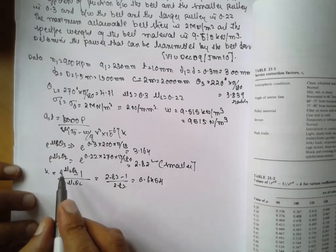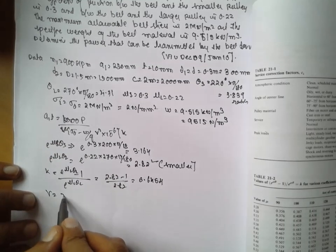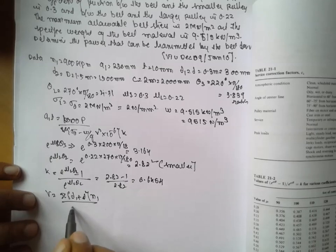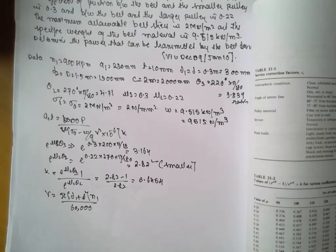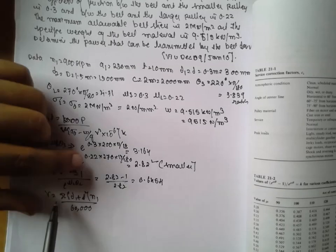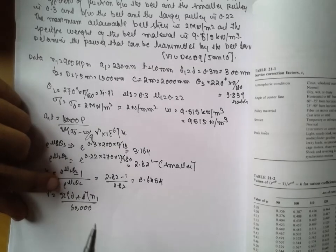Now you have to find out the velocity. Velocity is nothing but V equals pi times D1 plus t into N1 divided by 60,000. Thickness you have to consider only in the case of flat belt drives, not in the case of V belt drives. In the V belt drive we are not writing t there. You have to write directly pi D1 N1 divided by 60,000.